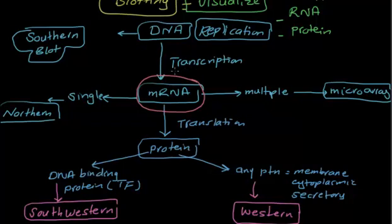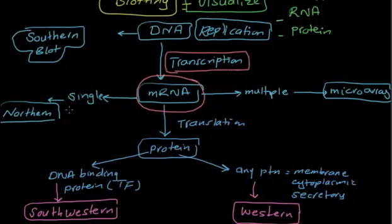If the question asks about seeing a product at the transcription level, assume it is talking about mRNA. For a single mRNA go with Northern blot; for multiple mRNAs go with microarray. Note that microarray is not strictly a blotting technique, but it is included here because it appears in the standard diagram at the transcription level.